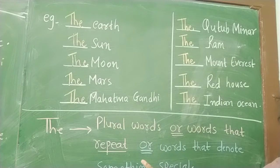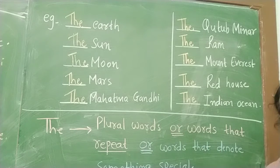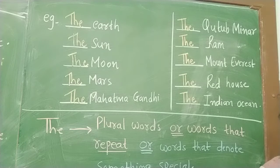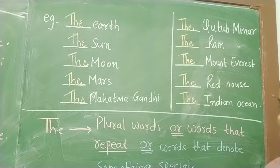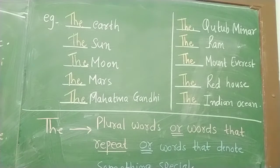This is an elephant. Agar aisa hai — this is an elephant — toh 'the elephant' will come. The elephant. This is Sham — the Sham. In this way it will come. So this is about 'the'.